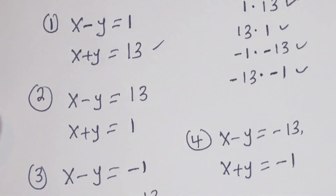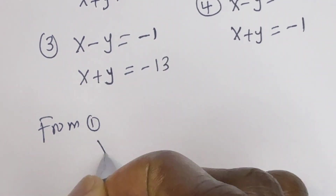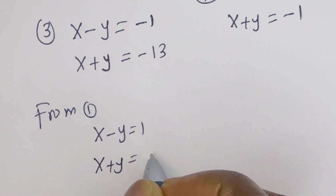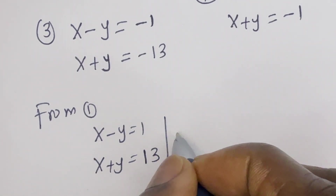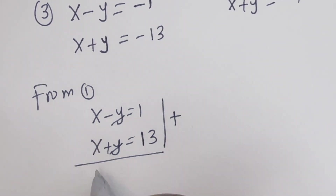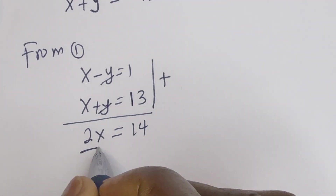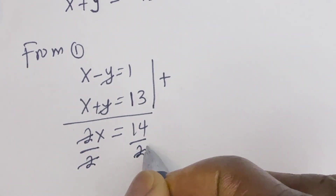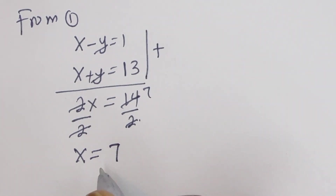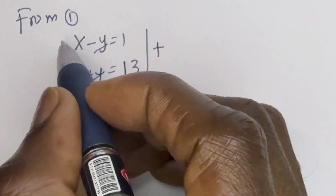Let's solve the first case using elimination method. From the first case, we have x minus y equals 1, and x plus y equals 13. Let's add the two equations together. By elimination method, the y terms cancel. We have 2x equals 1 plus 13, that is 14. Let's divide both sides by 2, giving x equals 7. We've gotten the value of x. Let's solve for y using equation 1.